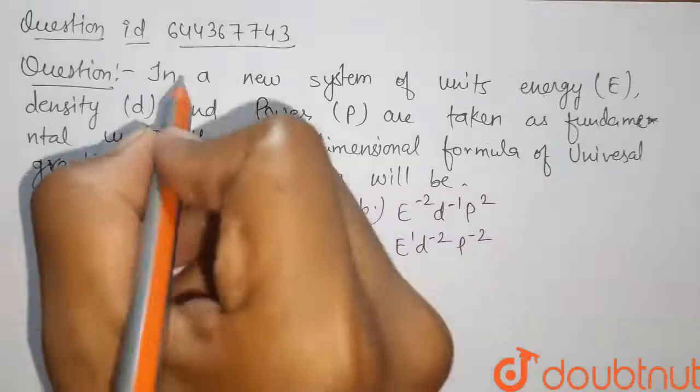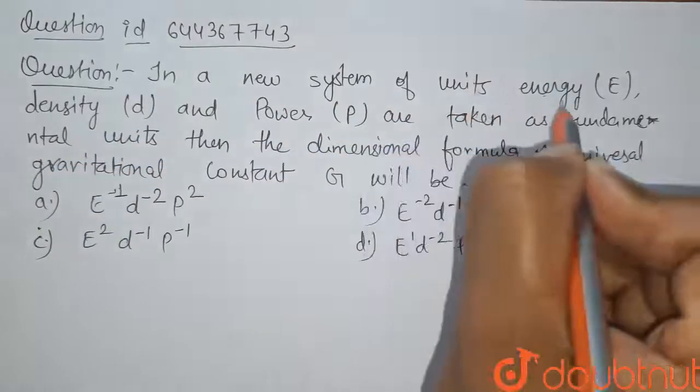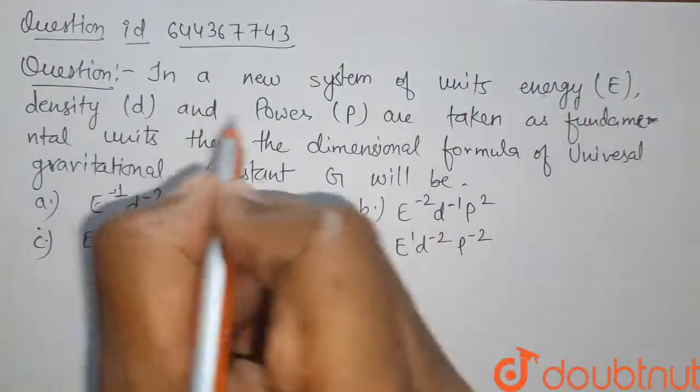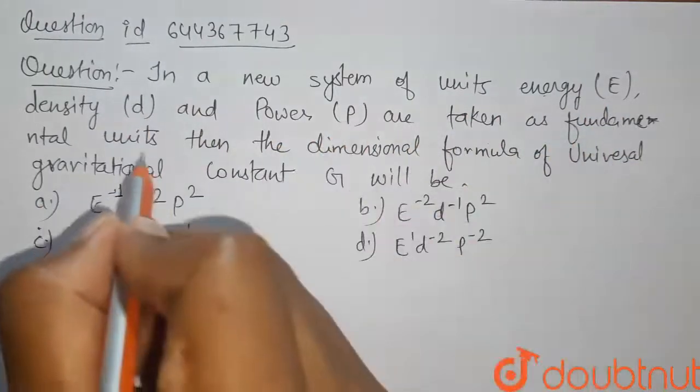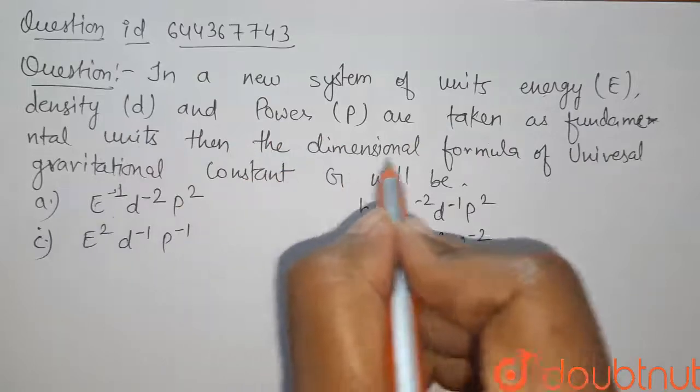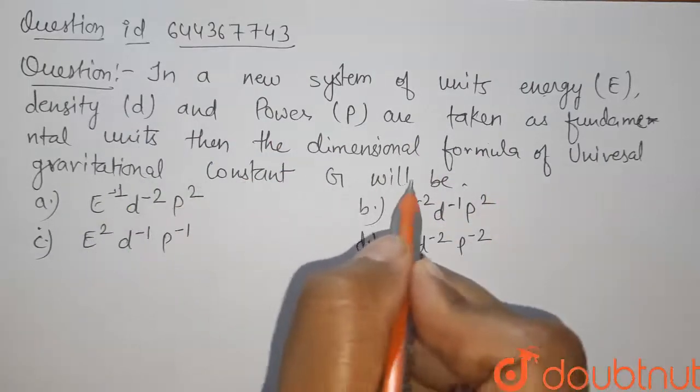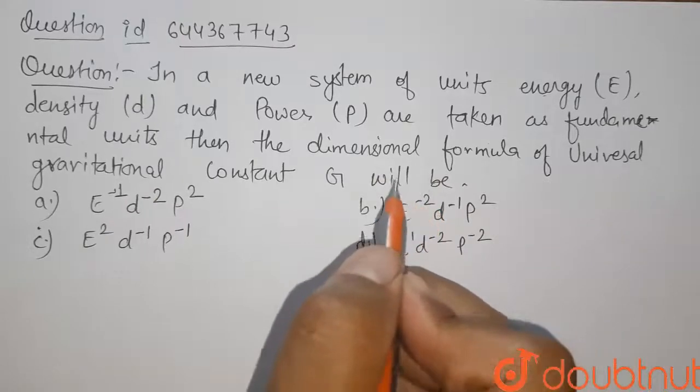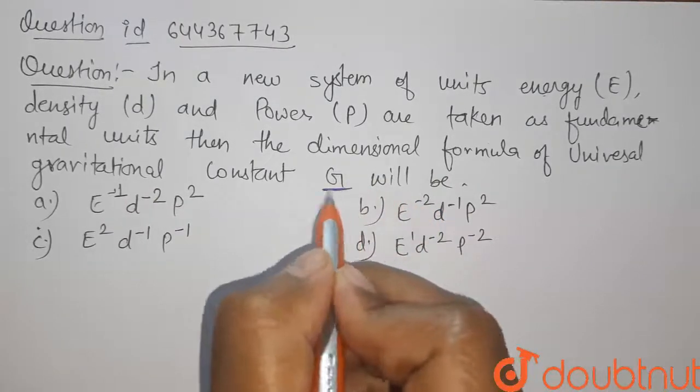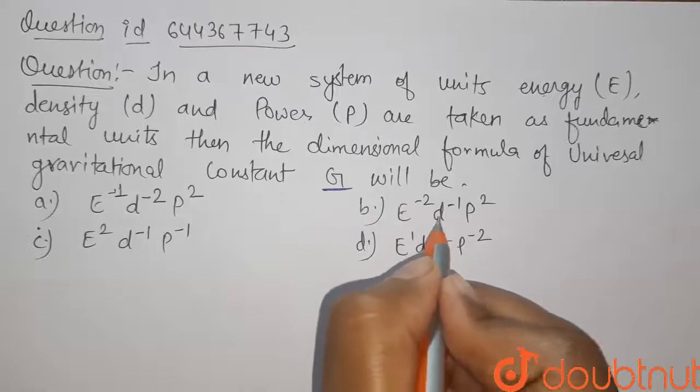Students, here is our question. In a new system of units, energy E, density D and power P are taken as fundamental units. Then the dimensional formula of universal gravitational constant G will be. So here we have to find the dimensional formula for G in terms of E, D and P.